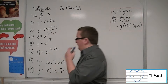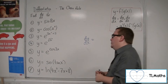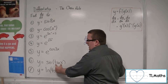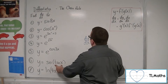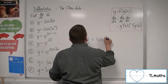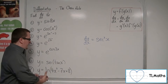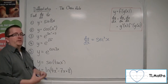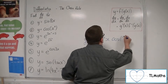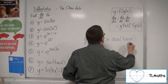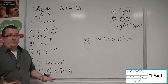Number six: y equals sine of tan x. The derivative of tan x is sec squared x — that is the derivative of the u. So sec squared x comes out to the front. Sine differentiates to cosine, so cosine of tan x. That's number six.